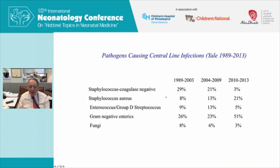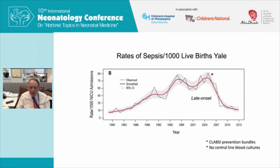The Yale publication broke down three time periods: 1989–2003, 2004–2009, and 2010–2013. Coagulase-negative Staphylococcus was common early on, but in the final epoch it was only three percent, while Staphylococcus aureus and gram-negatives became much more prominent. What happened at that time was they instituted prevention bundles for these kinds of infections, which I'll talk about in a moment — and they also stopped doing central line blood cultures.